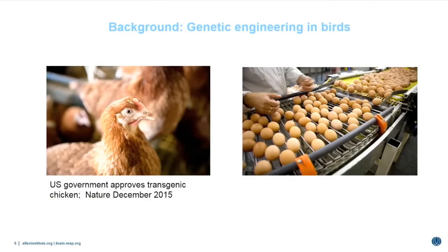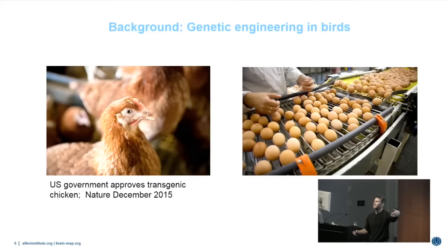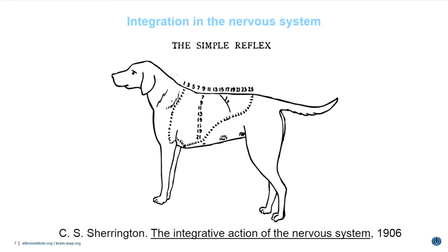This technique of lentiviral transgenesis really kicked off a wave of innovation in avian genetics, focused primarily on two applications: one is the generation of poultry immune to certain forms of disease like H1N1, and the second is the development of hens that will lay biopharmaceuticals in their eggs. Last year, the FDA approved a strain of transgenic chickens that produce in their egg whites a human therapeutic protein that can be used pharmaceutically.